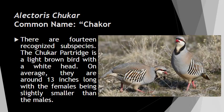Alectoris chukar has 14 recognized subspecies. The Chukar Partridge is a light brown bird with a white head. On average they are around 13 inches long, with the females being slightly smaller than the males.